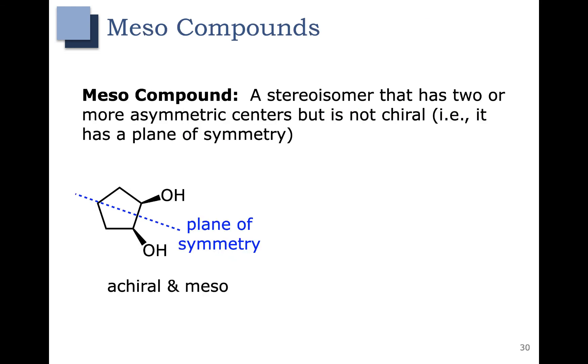So here's our formal definition for a meso compound. A meso compound does have two or more asymmetric centers but is not chiral. You can see the example that we just looked at on the previous slide. It has two chiral carbons, but due to the plane of symmetry is achiral. So we would refer to this compound as being meso.